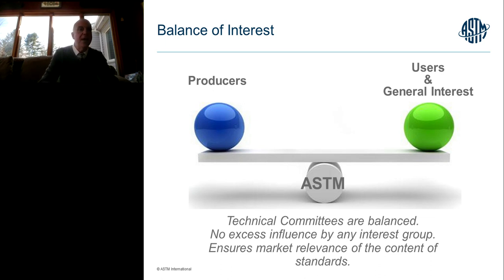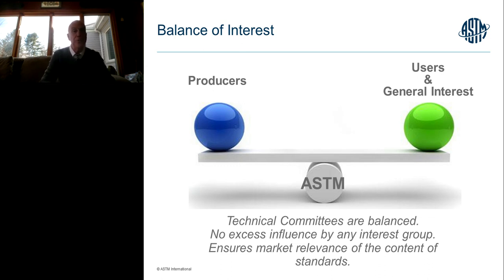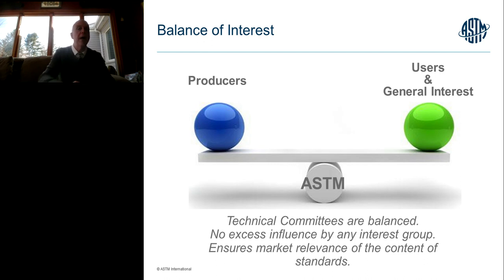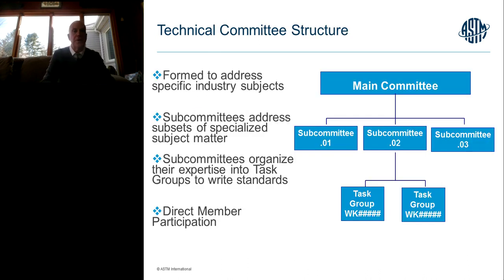Another aspect of ASTM is we require a balance of interest for a committee to be actively developing standards. The primary concept of balance is that producers of the products and services covered by the technical committee cannot have more than 50% of the votes when you collectively look at the whole technical committee. The users, consumers, and general interests can have more than 50% of the votes, so balance is maintained by minimizing the role of producers to not more than 50%.